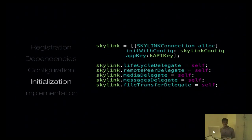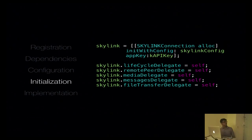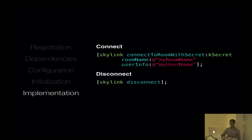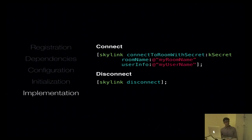You initialize the Skylink object here. It's initialized using the configuration that you created earlier as well as the API key you got online. If you don't need it, you don't need to set the delegate. Otherwise, just set the necessary delegates and you're good to go. This is one of the easiest ways of setting up the Skylink connection. We also offer an alternative method through generator credentials, which adds an additional layer of security if you require that in your app. Otherwise, you can simply connect with the secret you got earlier, a room name, and the user info.